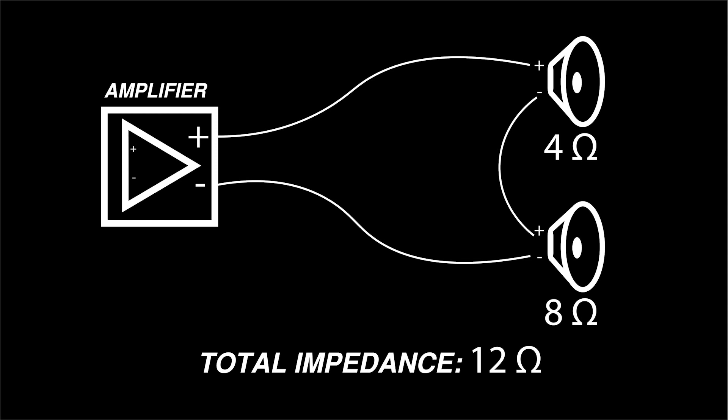To connect speakers in series, wire the positive terminal of the amplifier to the positive terminal of the first speaker. Then wire the negative terminal of each speaker to the positive terminal of the next speaker. The negative terminal of the last speaker will connect to the negative terminal of the amplifier, completing the series circuit.